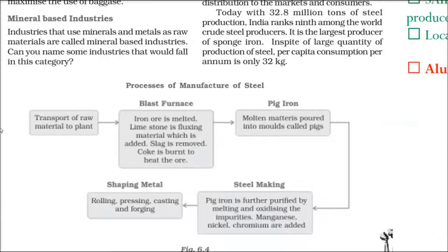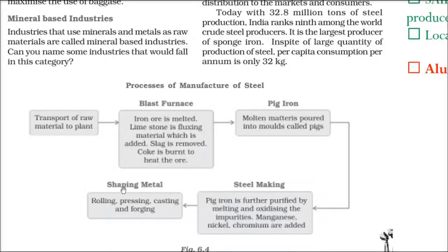How is steel produced? First, raw material is received at the plant. In the blast furnace, iron ore is melted. Limestone is added as a fluxing material, and slag or dirt is removed. Coke is burned to heat the ore, producing molten iron called pig iron. This molten metal is put in molds to take shape, called pigs. The pig iron is then purified through melting and oxidation. Manganese, nickel, and chromium are added to give strength to the steel. Finally, rolling, pressing, casting, and forging are used to give shape to the metal.